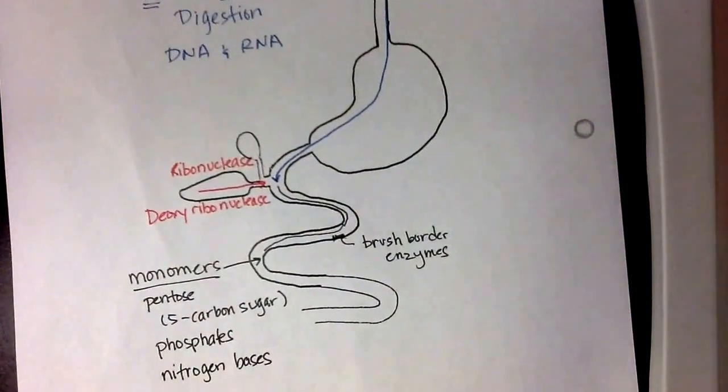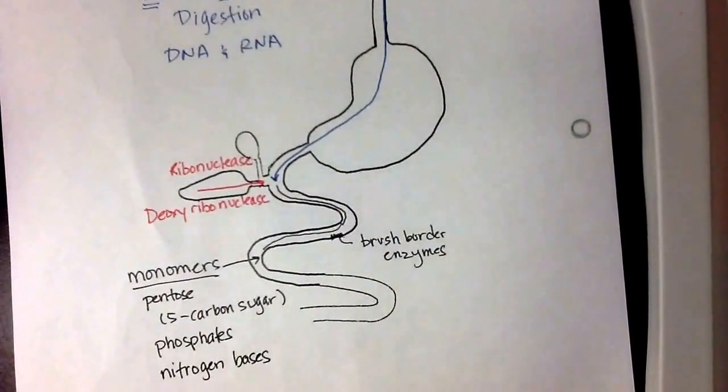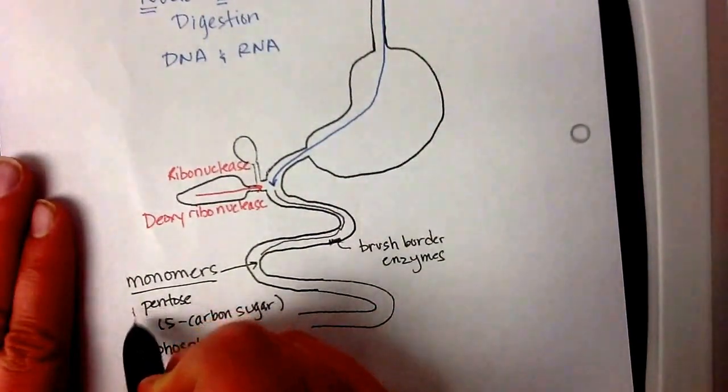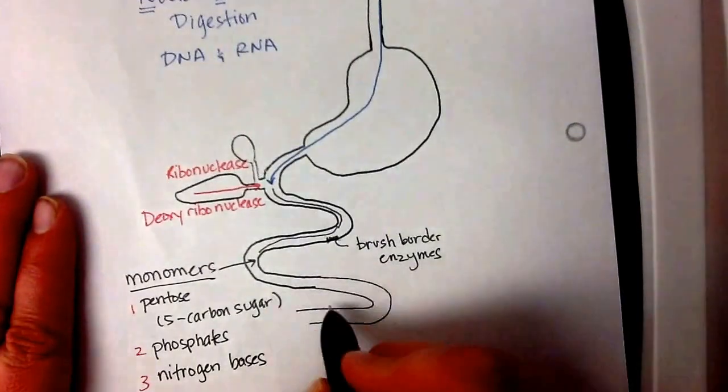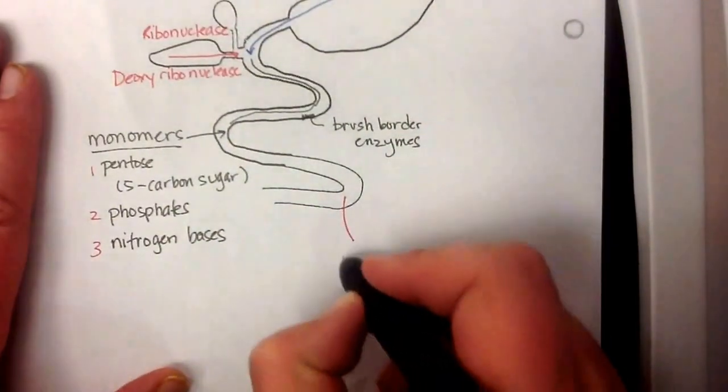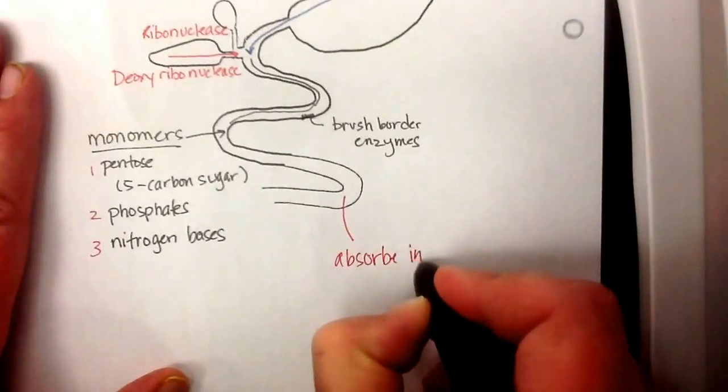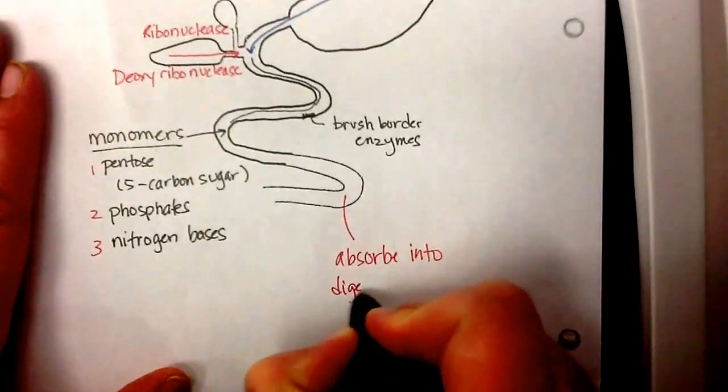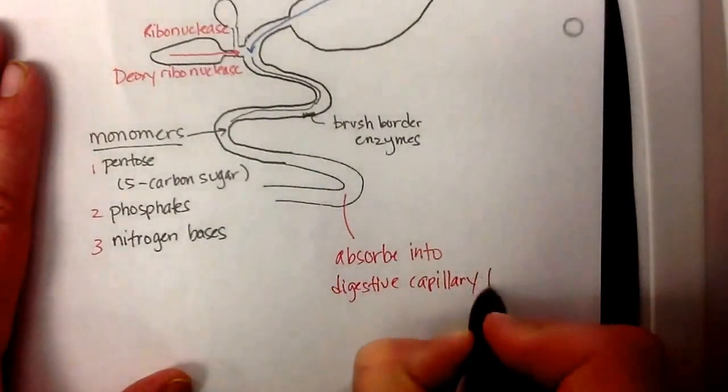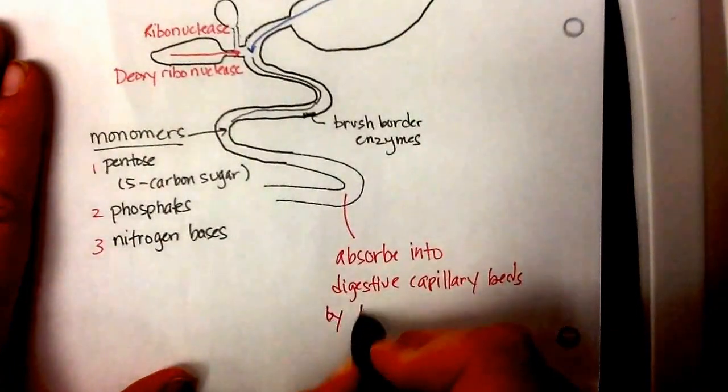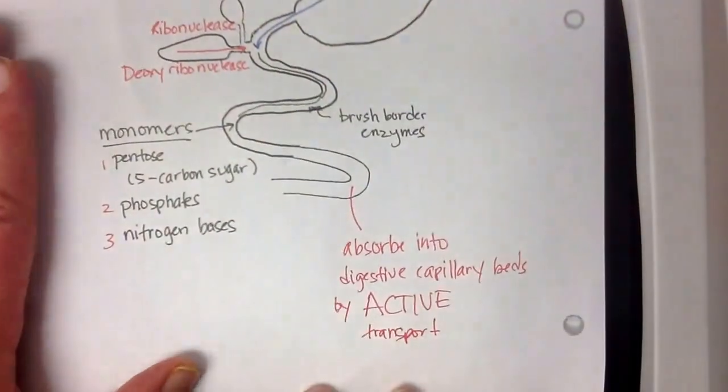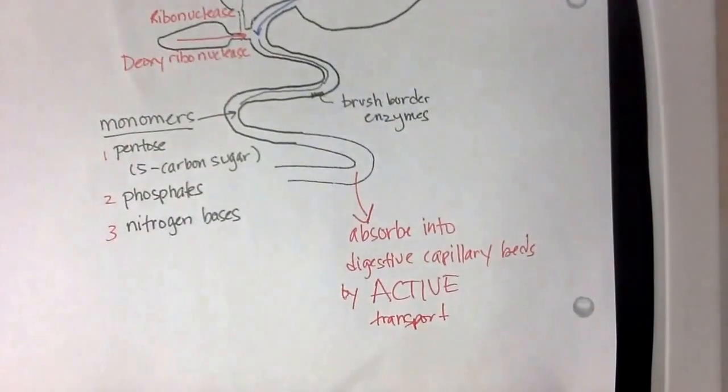And then we can use these to either build up new DNA and RNA or we can use them in other metabolic processes. These are going to be absorbed, so these three components of DNA and RNA are going to be absorbed into the digestive capillary beds by, and here's the big difference, we haven't talked about this before, active transport. It means it's going to take work, but it's going to move it out of the intestines and into those digestive capillary beds.